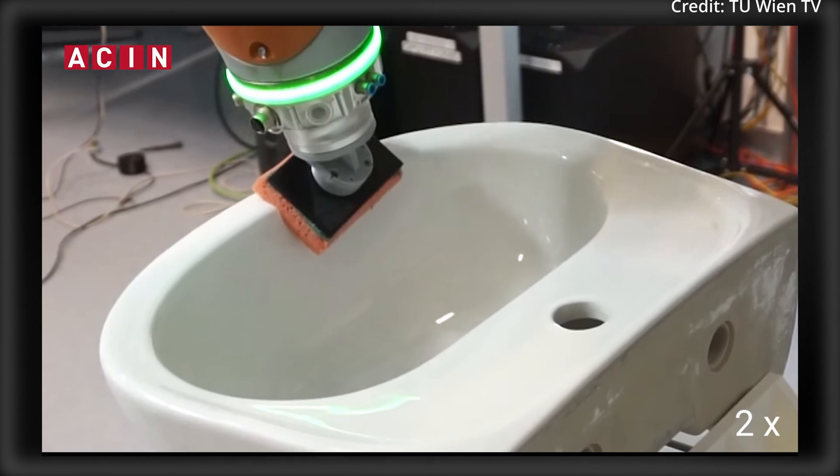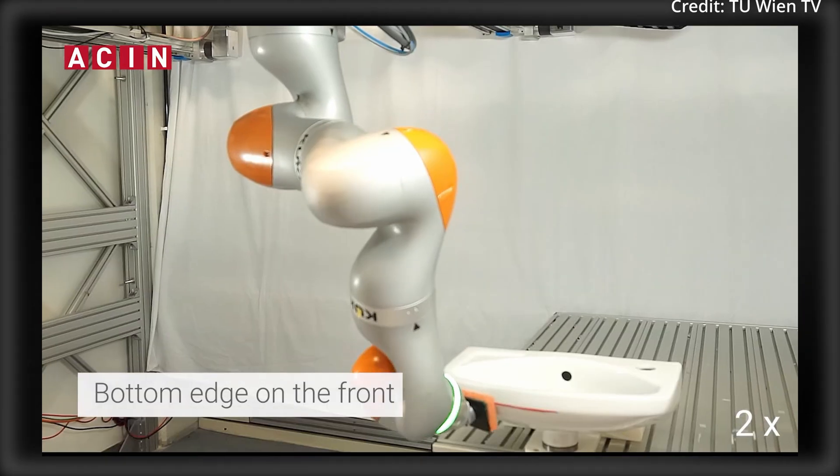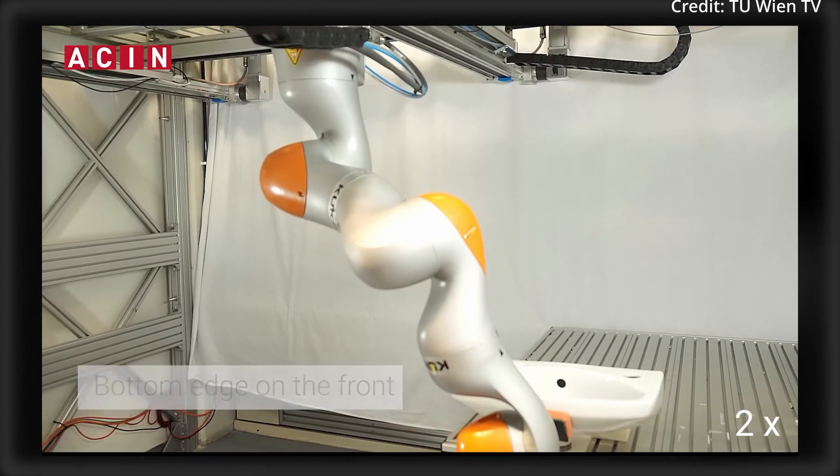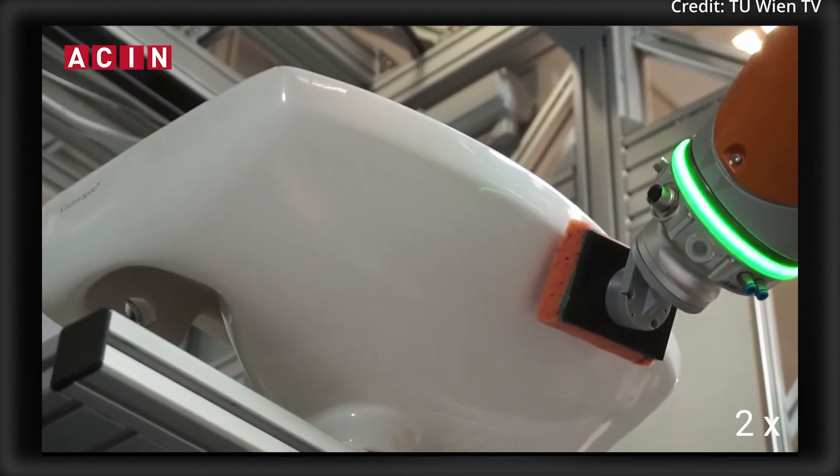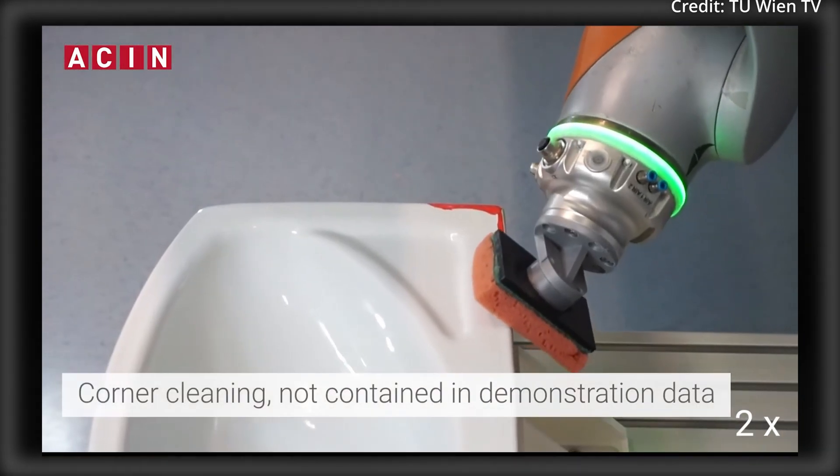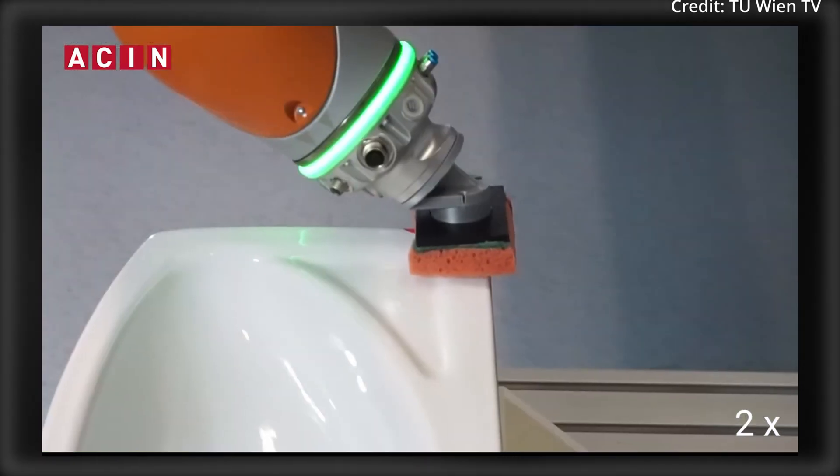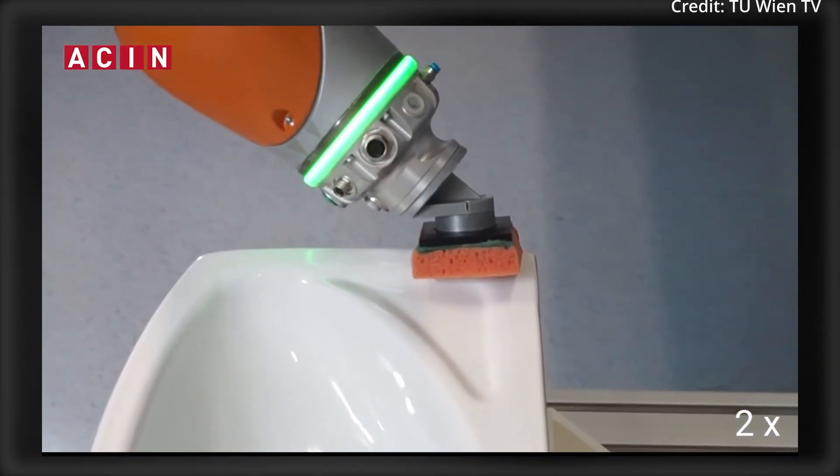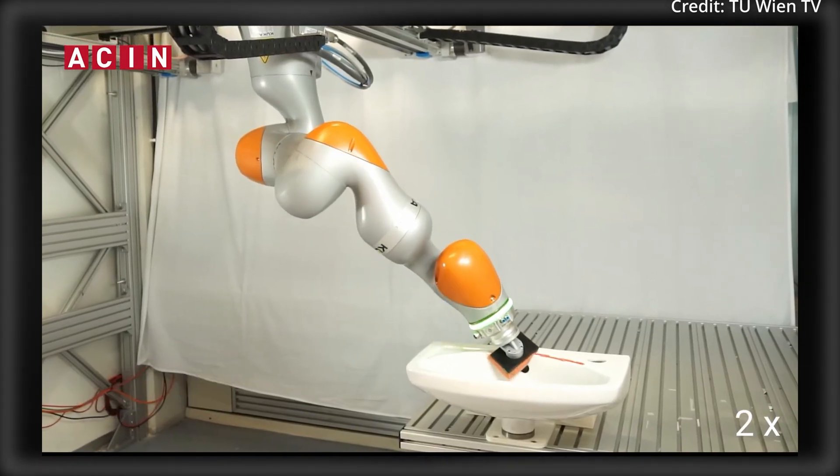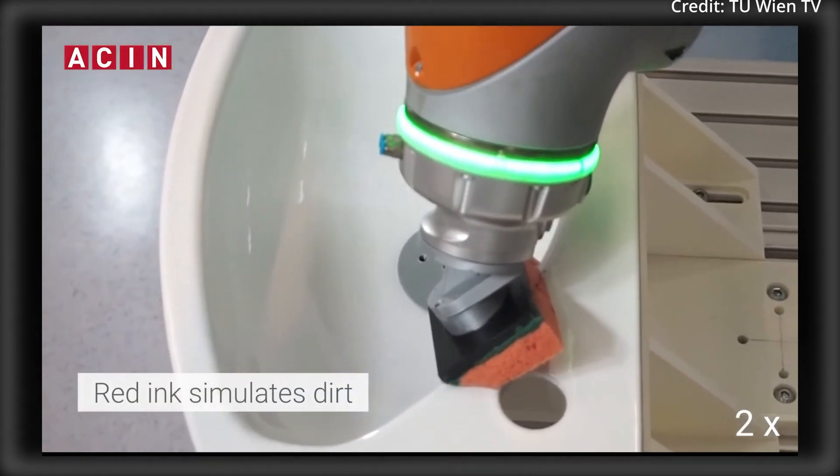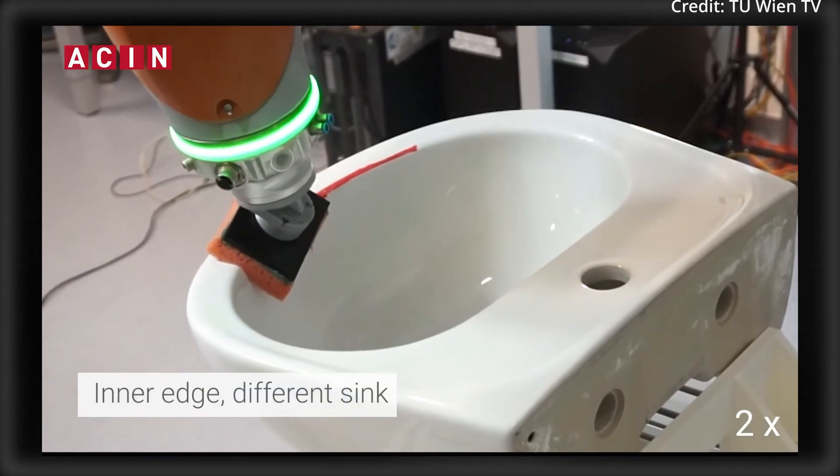By observing a human using a sensor-equipped sponge, the robot learned the nuances of cleaning through imitation. This imitation learning approach allows the robot to adjust its technique based on the basin's contours, applying the right amount of force at the right angle. And while capturing the geometric shape is simple, the actual challenge lies in teaching the robot the appropriate movements and pressures for each scenario.